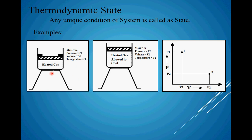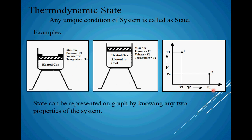In the first case we had more pressure and less volume — P1 and V1. In the second case, we have less pressure and more volume — P2 and V2. It should be noted that a state can be represented on a graph by knowing any two properties of the system. We considered pressure and volume here, but you can take any other two properties such as temperature-entropy or temperature-enthalpy to represent a state of a system.